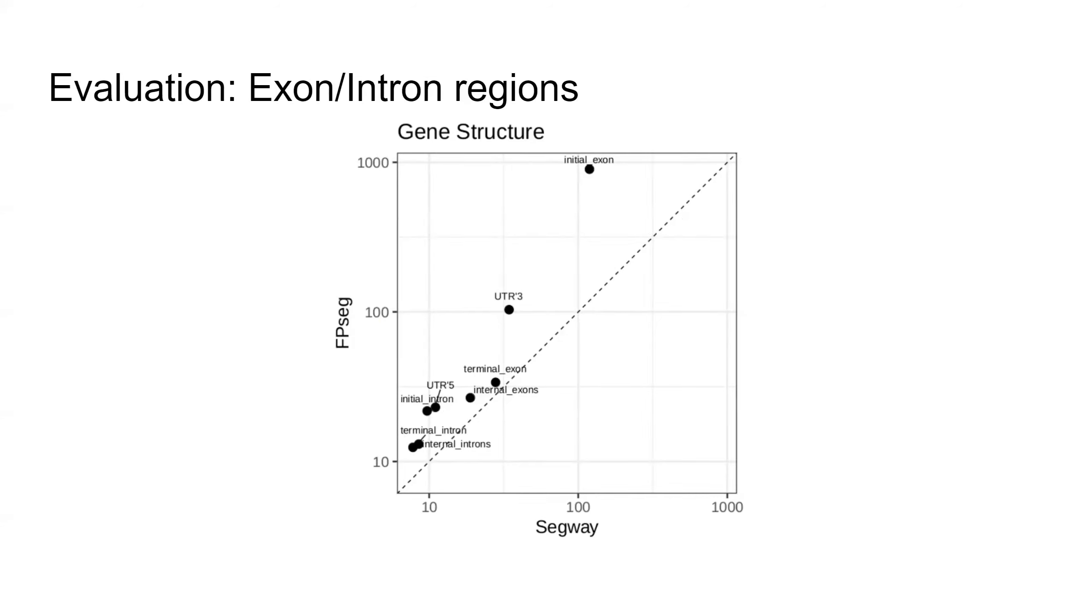We also checked the enrichment for exon and intron regions. FPseg again outperformed SEGWAY. Notably, we observed a 913-fold enrichment for the initial exon over SEGWAY's 118.